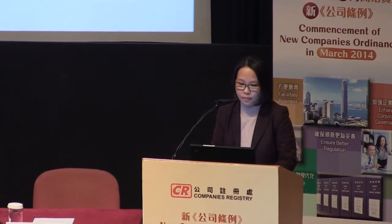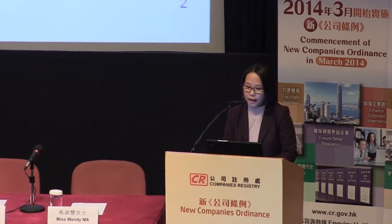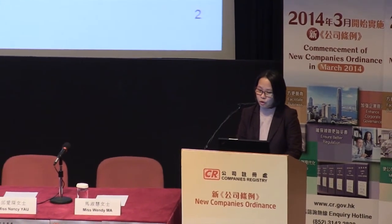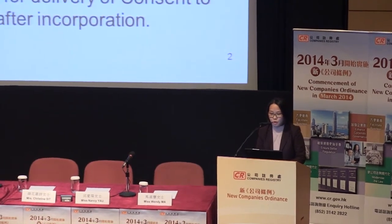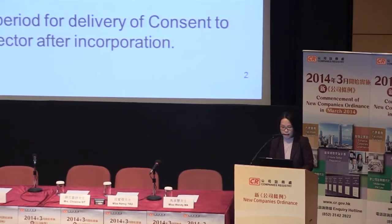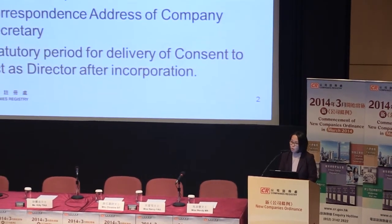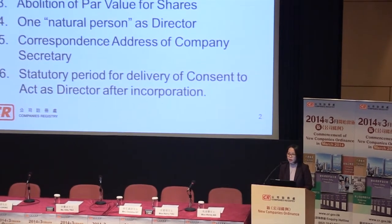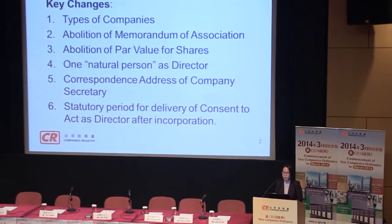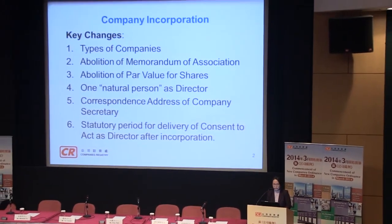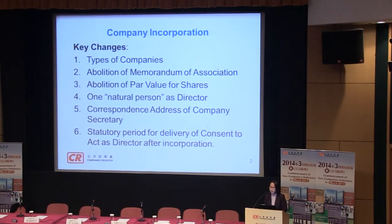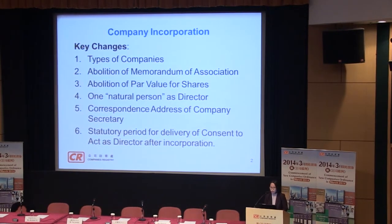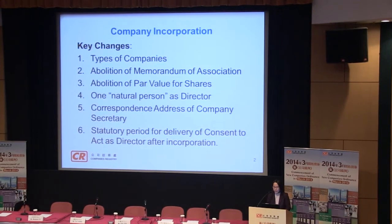The six key changes are: types of companies, abolition of memorandum of association, abolition of par value for shares, one natural person as director is required, and correspondence address of company secretary in case it is a natural person — only the correspondence address is needed.